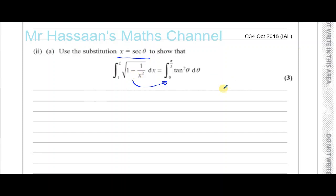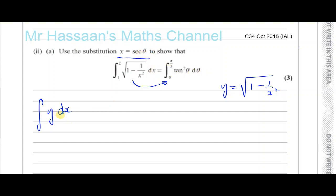Use the substitution x equals sec theta. What I'm going to do is consider this part as being y — the square root of 1 minus 1 over x squared. So what we have here is the integral of y with respect to x. If I wanted to write it in terms of theta, I have to rewrite this as the integral of y times dx/dθ d theta. This is the same thing as the integral of y dx — these cancel out.